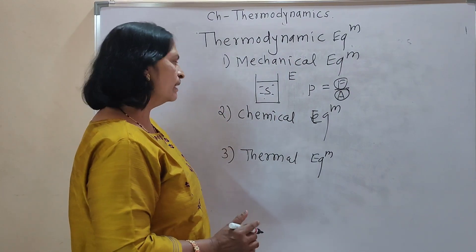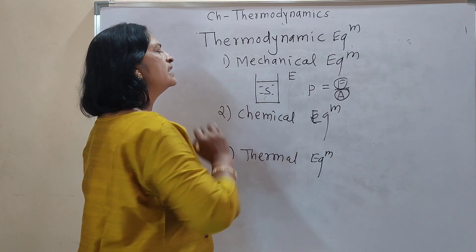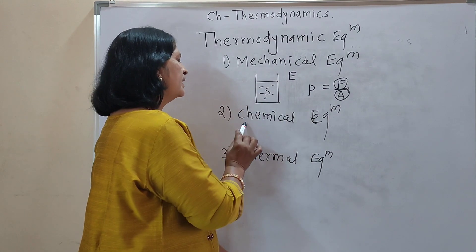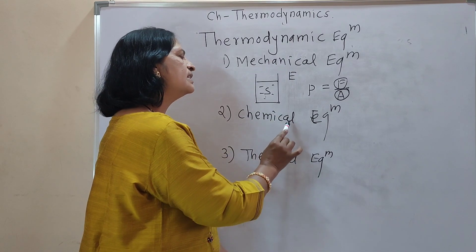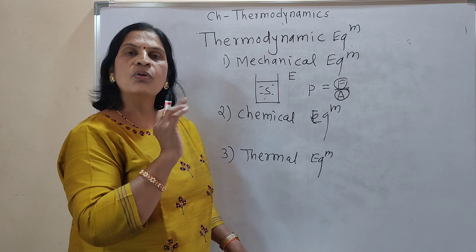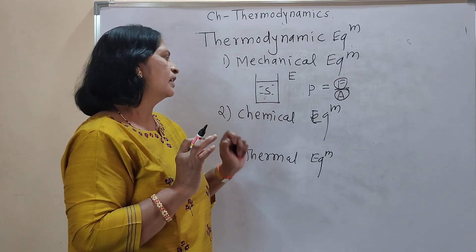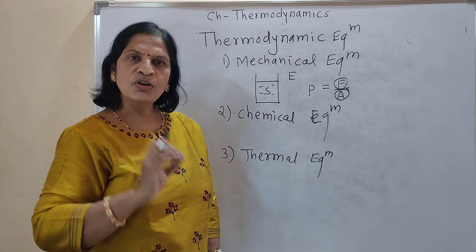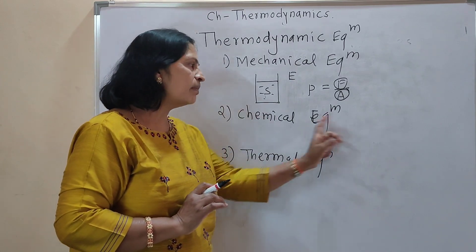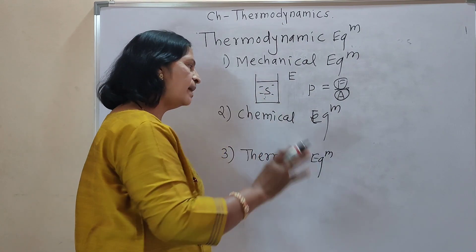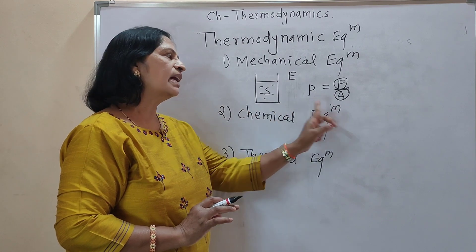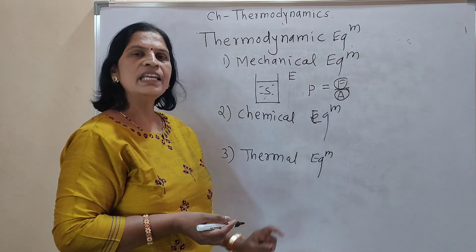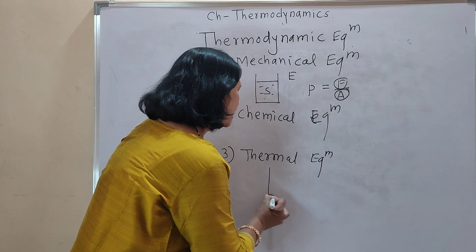The second condition is chemical equilibrium. When there is no chemical reaction occurring within the system and no transfer of matter due to diffusion between the system and surrounding, we say the system is in chemical equilibrium. Also, when the chemical composition of the system remains the same throughout and does not change with time, the system is in chemical equilibrium.